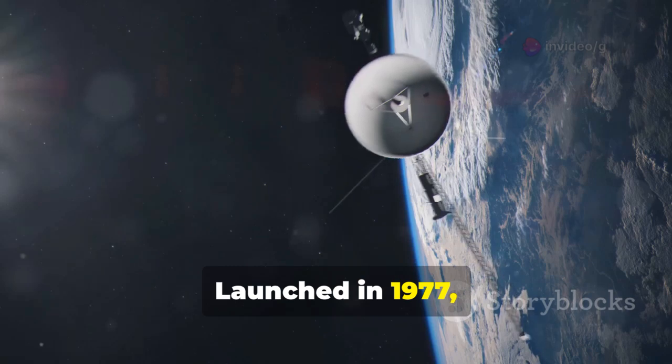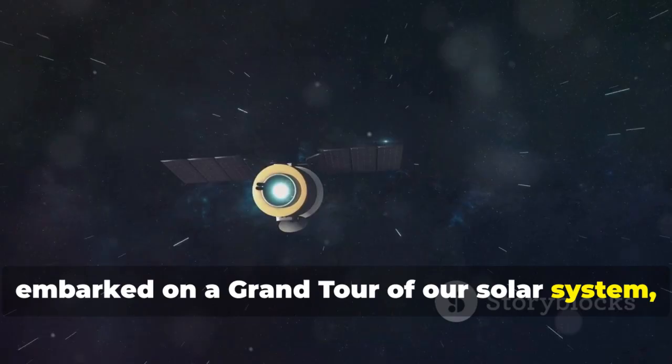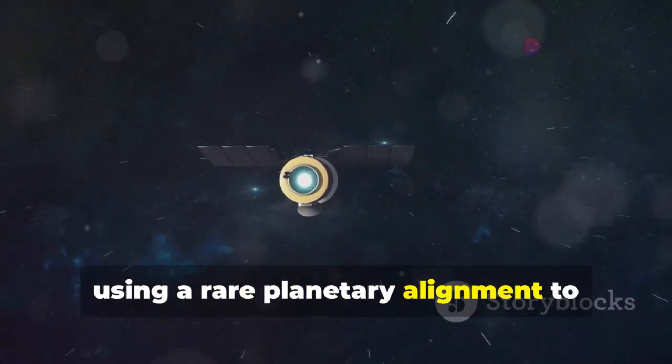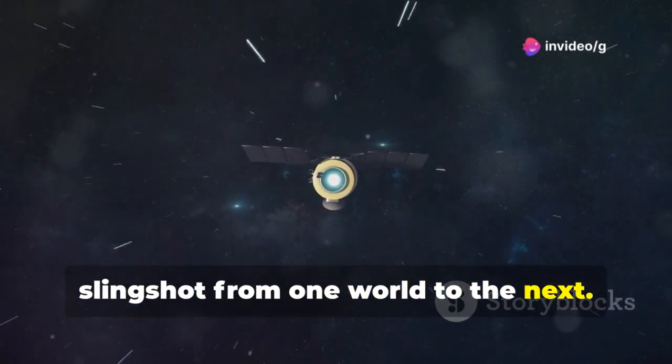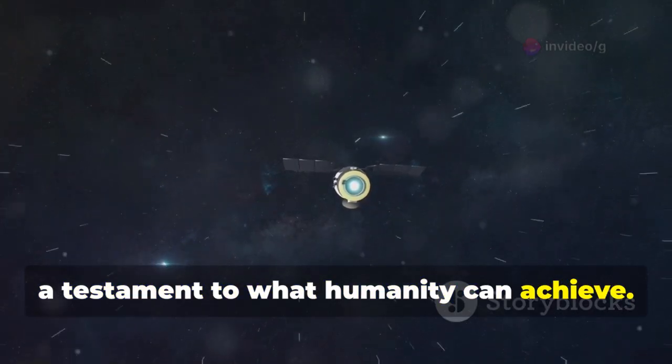Launched in 1977, Voyager 1 and its twin Voyager 2 embarked on a grand tour of our solar system, using a rare planetary alignment to slingshot from one world to the next. Their journey was a feat of engineering and vision, a testament to what humanity can achieve.